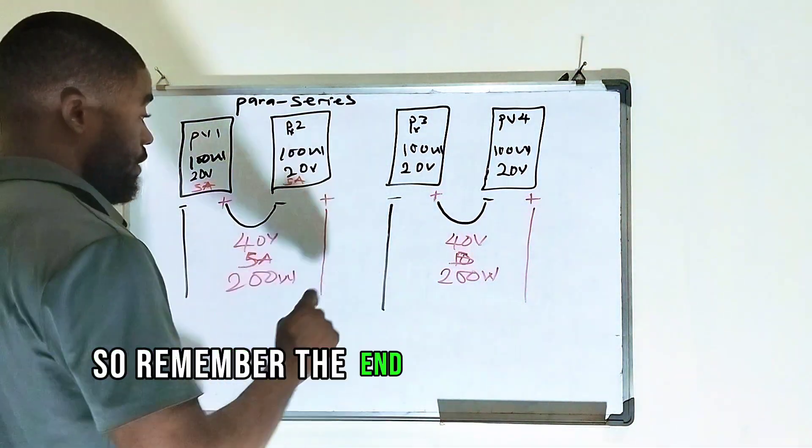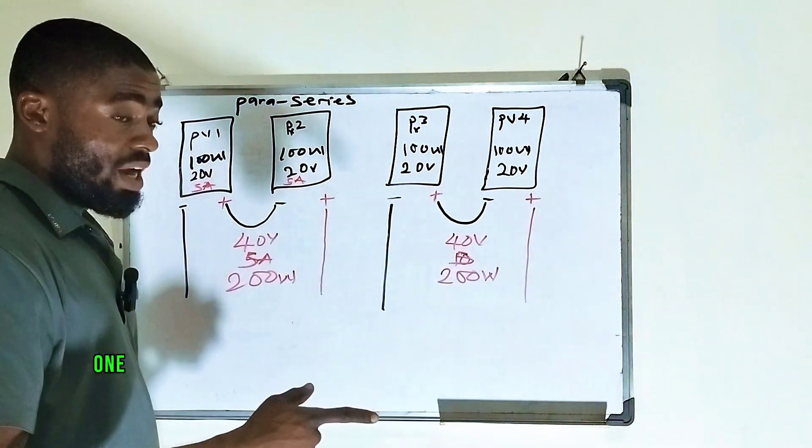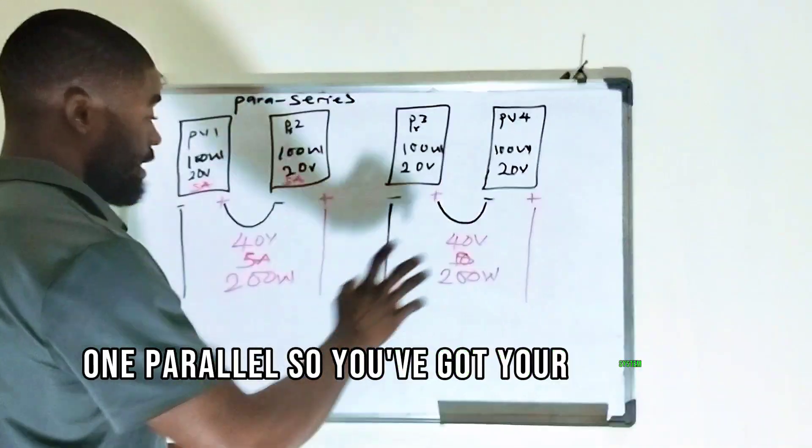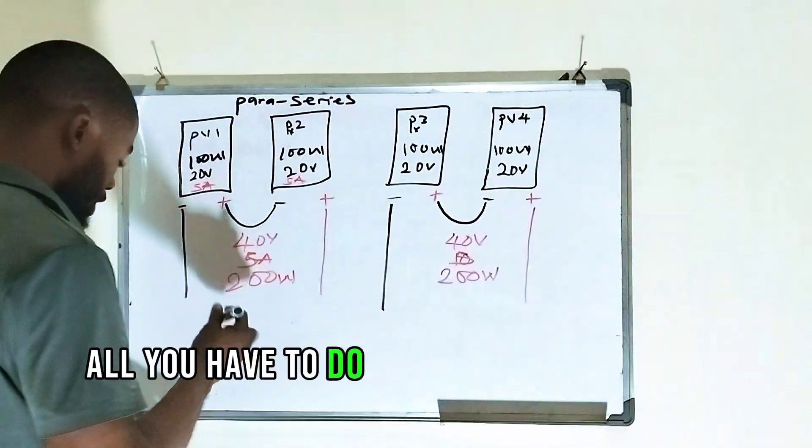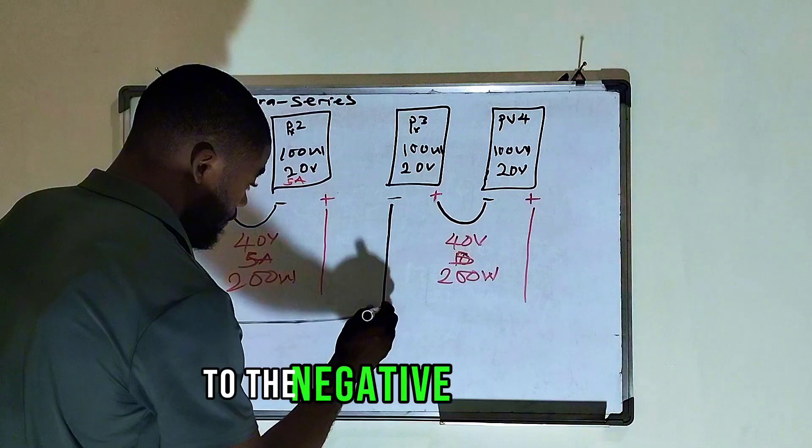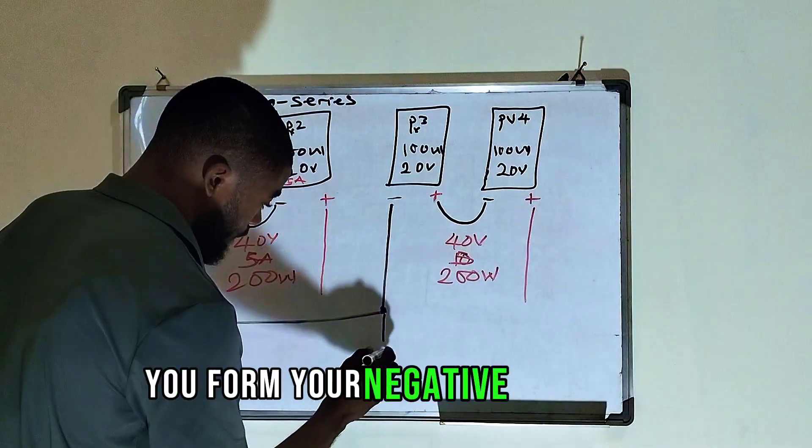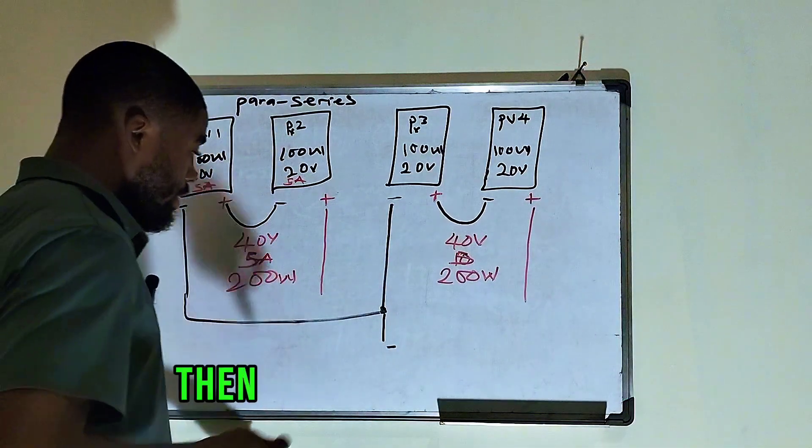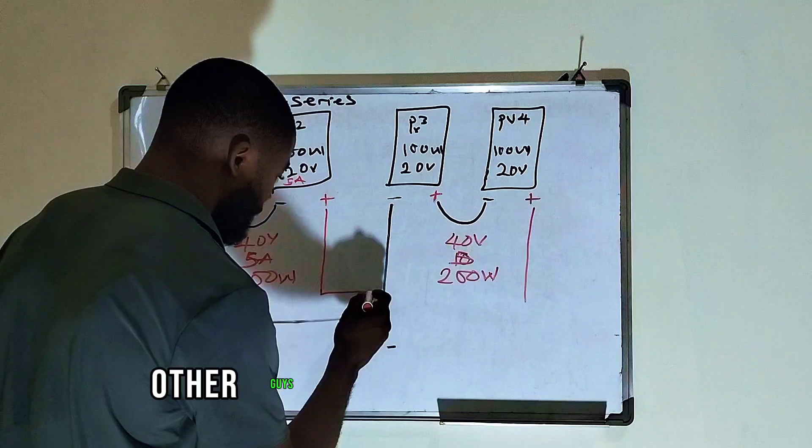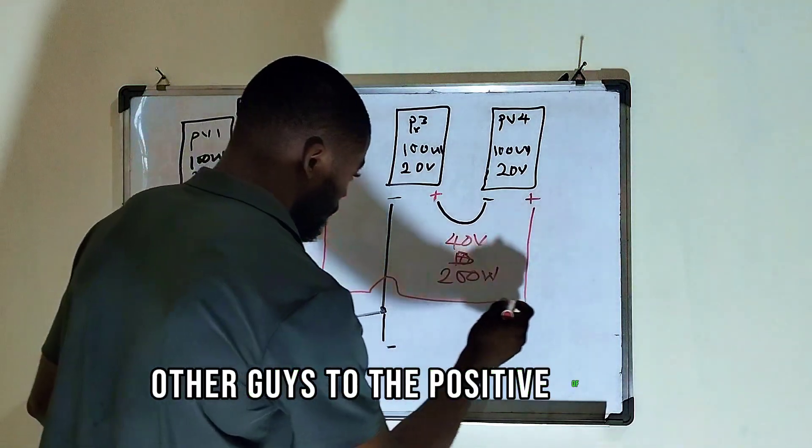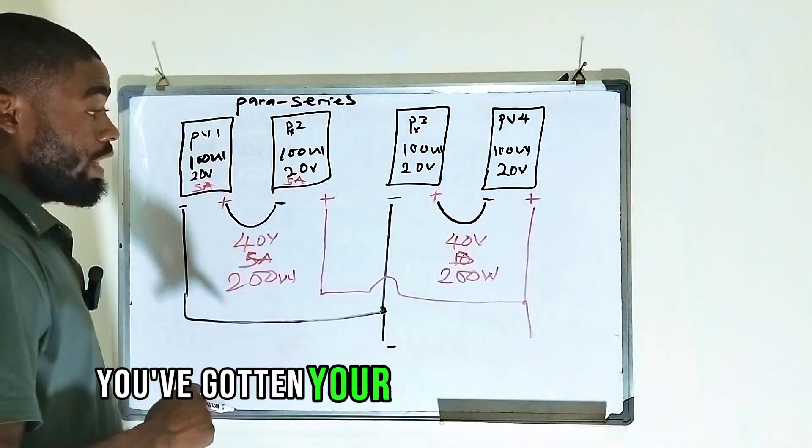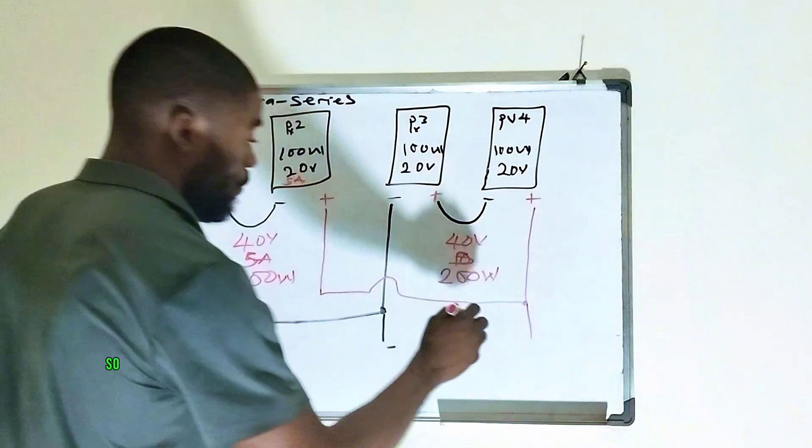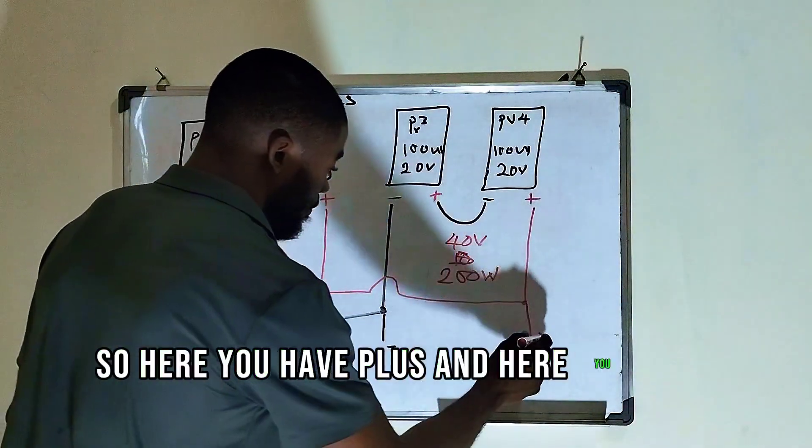So remember at the end of everything, it will be two Series, one parallel. So you've gotten your system in Series. All you have to do is to take the negative of this guy to the negative of this guy. You form your negative here. Then take the positive of these other guys to the positive of this. You've gotten your panels in Paraseries. So here you have plus and here you have minus.